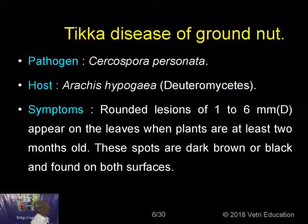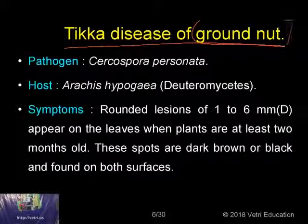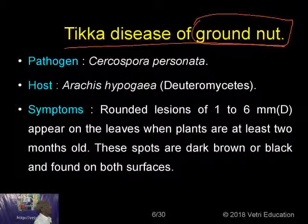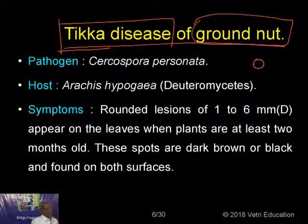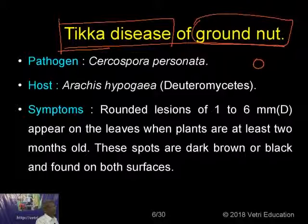The next discussion is about the Tikka disease of groundnut. Groundnut is a very common crop in South India. Tikka means vermilion — the mark Indian women wear on their forehead — and the disease symptom is in that shape, which is why it is called Tikka disease. The pathogen is Cercospora personata — 'personata' in Latin means a human face, because the pathogen spore looks like a human face with eyes, nose, and mouth. The host is Arachis hypogaea — 'hypo' means below and 'gea' means ground, because groundnut grows below the soil level.